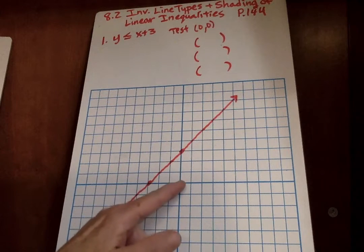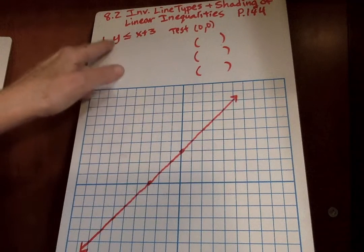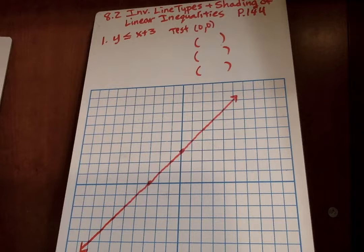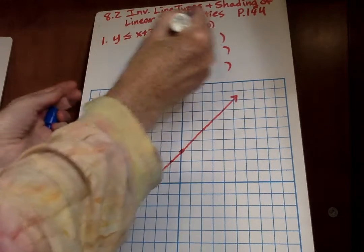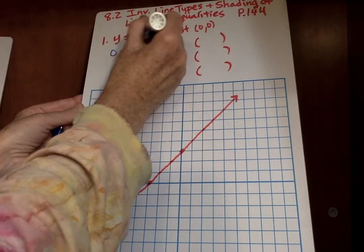So if it's shaded, I'm going to test 0, 0. If it's shaded, 0, 0 should make this equation or inequality true. So let's find out if it does. I'm going to say my 0 is y. Is 0 less than or equal to, let's see, 0 plus 3.